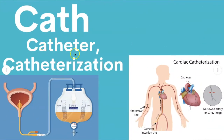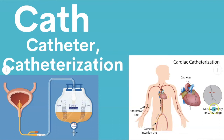Cath stands for catheter or catheterization. This is what we call a Foley catheter, where it goes in the bladder. But you can also have cardiac catheterization — they can go in through the radial or the femoral artery. Basically, they see an area that has narrowed, go in with a catheter to try to open that area up, and sometimes they have to stent the area so that it doesn't close back up.